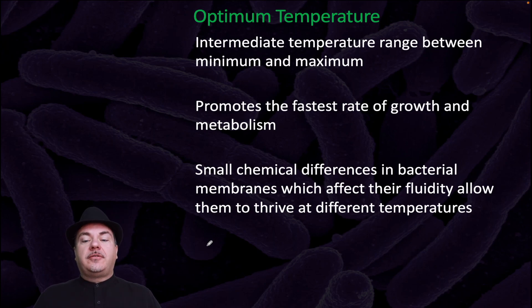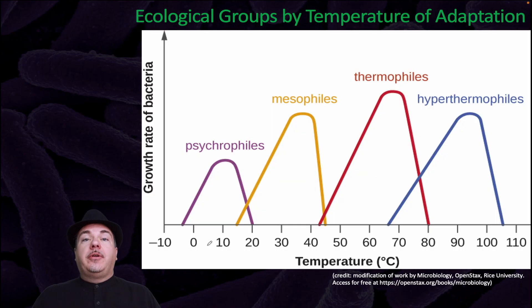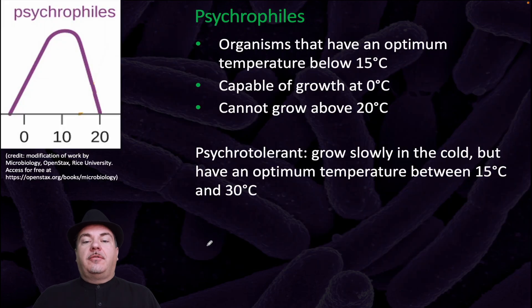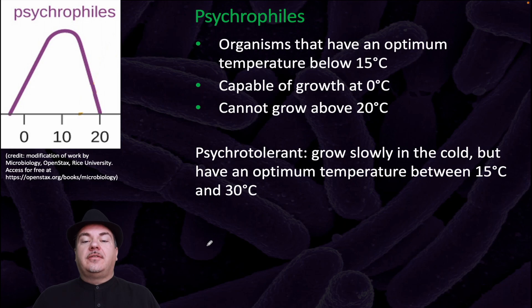Small chemical differences in bacterial membranes, which affect their fluidity, allow them to thrive at different temperatures. We can break down organisms into different groups based upon how they're adapted to temperatures. Starting with psychrophiles — these are organisms that have an optimal temperature below 15 degrees Celsius, capable of growth at 0 degrees Celsius, and they cannot grow above 20 degrees Celsius.